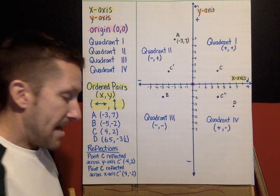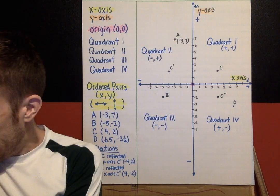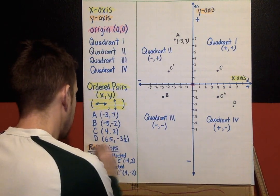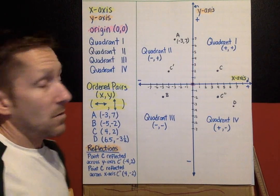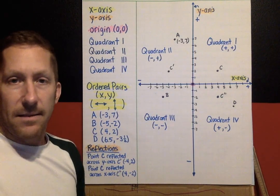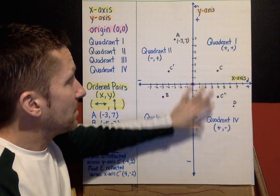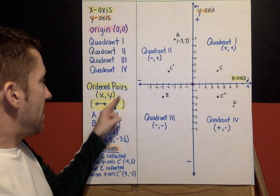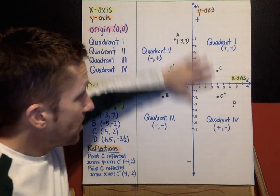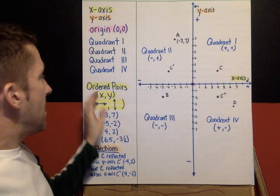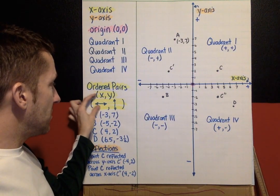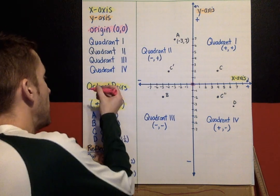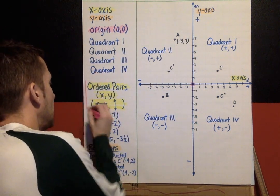So reflections — again, think fold. Today your practice is going to be identifying quadrants and putting ordered pairs onto a coordinate plane. The big idea for coordinate plane is this: ordered pairs always follow this guide. This is super important — ordered pairs always follow this guide.